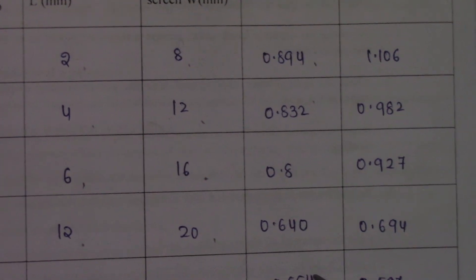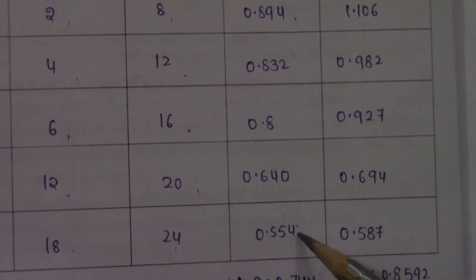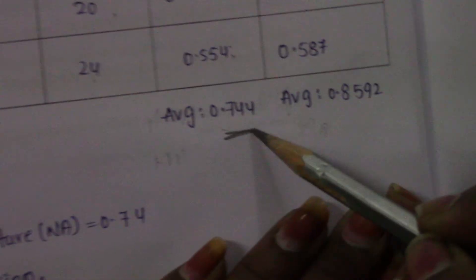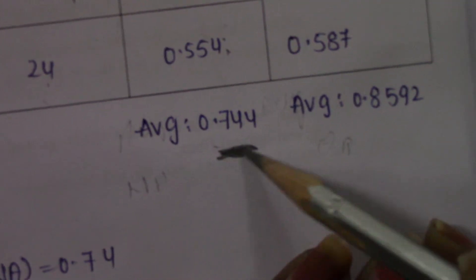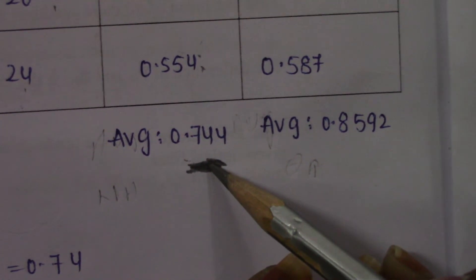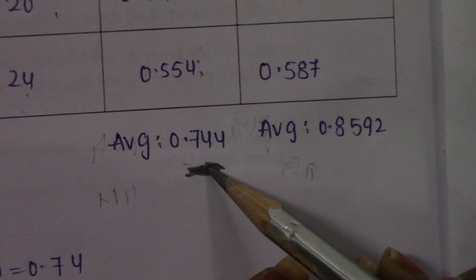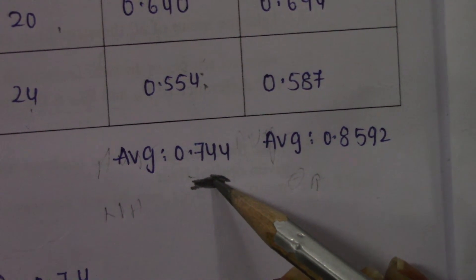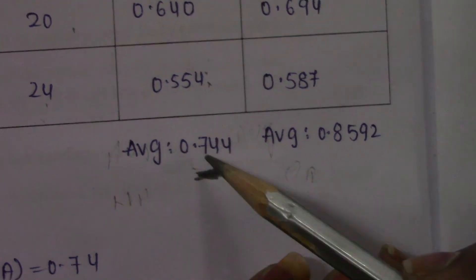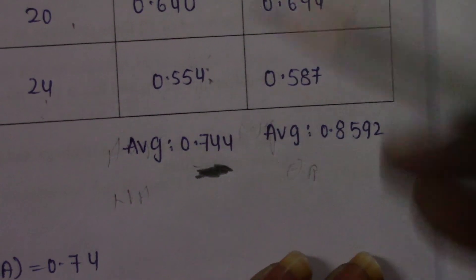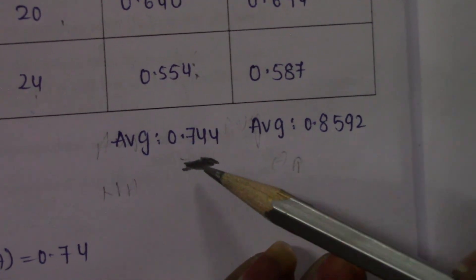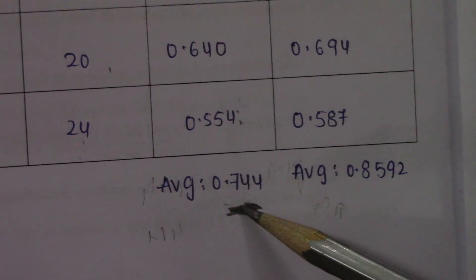After calculating NA for all five readings, you need to take the average. My average value of numerical aperture is 0.744. This is the light gathering ability of my 1 meter optical fiber for the given light source.